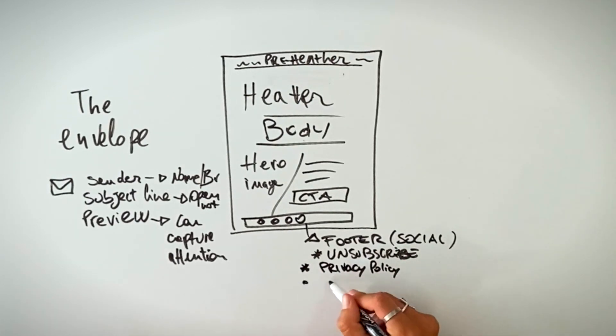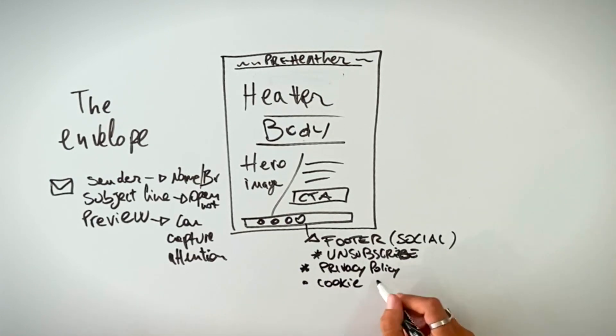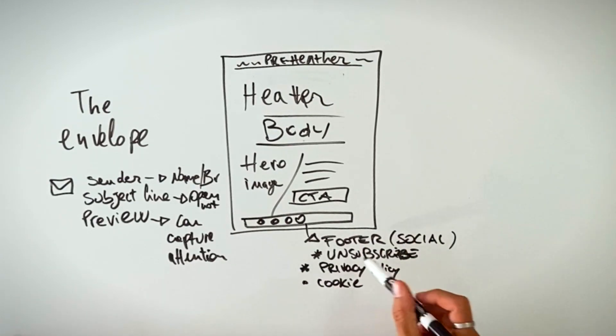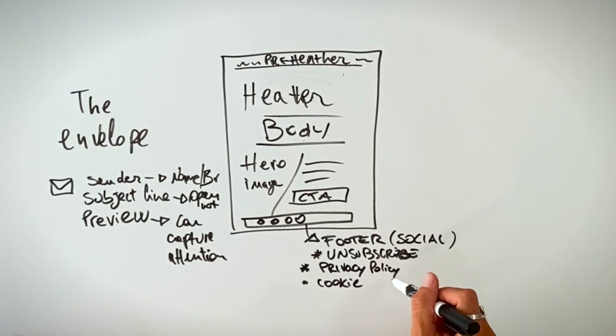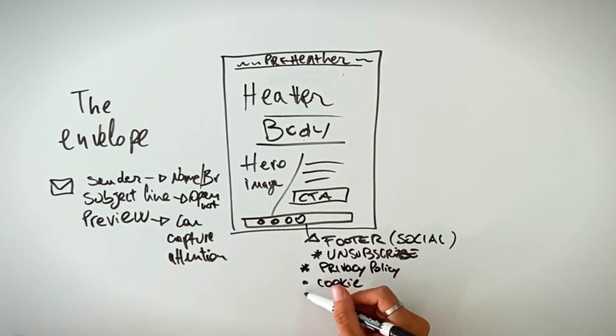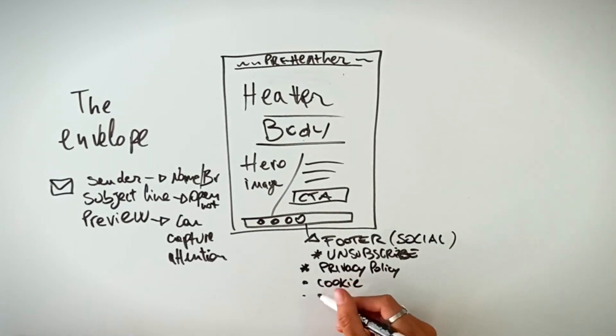Nowadays, privacy and cookie policy links are really important in the footer, so people can access them. Then there may be your name and address — this is important to make people understand you are a real person and not a scam, and they can verify that the address is real.